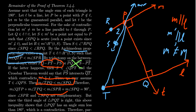Putting the two inequalities together: angle TPQ (angle three) is less than angle SPQ (angle four), and angle QTP (angle one) is less than angle SPR (angle two). So the sum of angles one and three is less than the sum of angles two and four. But angles two and four are complementary — they add up to 90 degrees. Therefore, angle one plus angle three is less than 90 degrees.